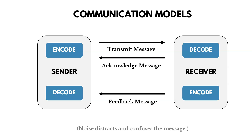The receiver decodes the message and then sends back an acknowledgement. An example is a project manager tells a stakeholder something, and the stakeholder says, 'I understand what you're saying.' That's an acknowledgement message. After acknowledging, the receiver might then send a feedback message — for example, 'I understand, but we also need to address this issue and that issue,' providing feedback.